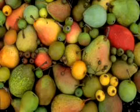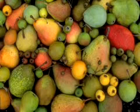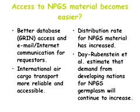Our gene banks, such as those at Corvallis that manage pears, are seeing annual distribution records each year. One of the reasons is that access to the material is easier — the GRIN database is more complete, and since about 1994 people can tap into the Internet to know what we have and how to order it. We now have FedEx and UPS that can deliver it nearly everywhere in the world. As a result, the distribution rate has grown. Colleagues in the Economic Research Service, through questionnaires, estimate it will continue to grow, and the area of most growth is going to be developing countries — China, India, Brazil — that are dramatically increasing their investment in agricultural research and come to us for materials.